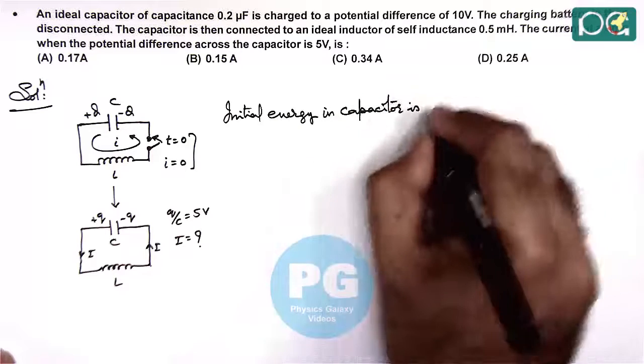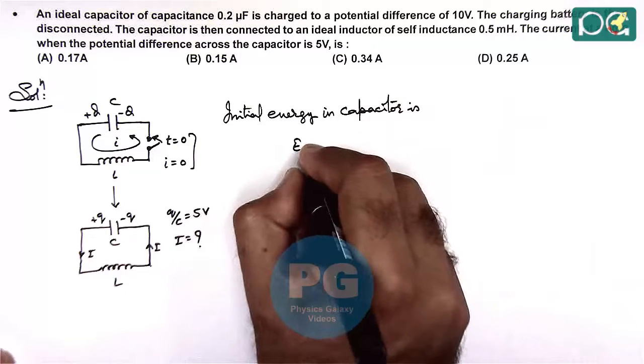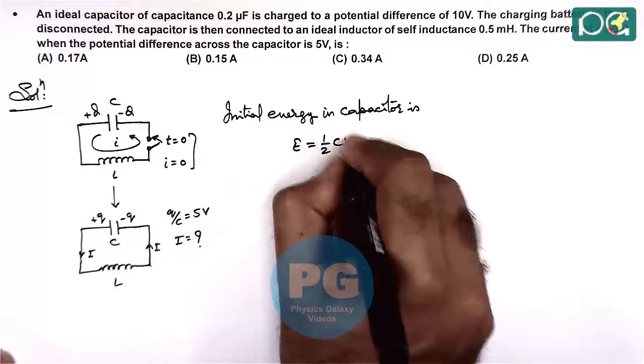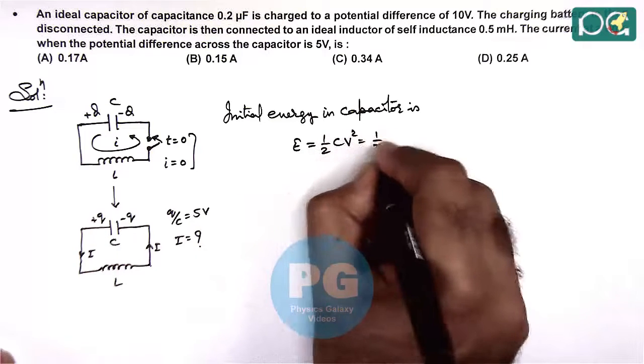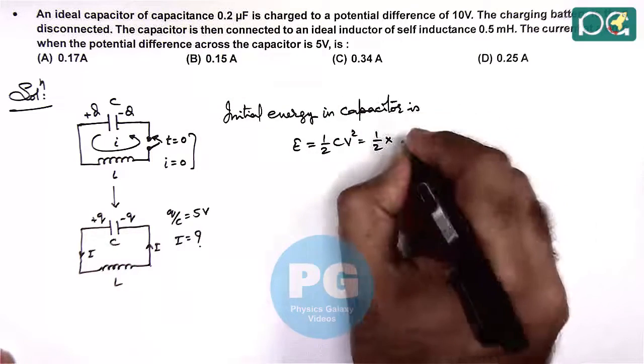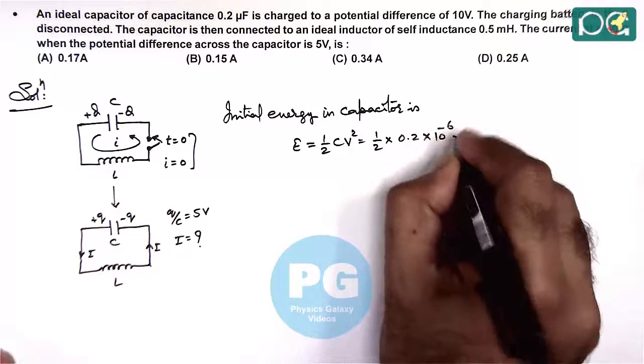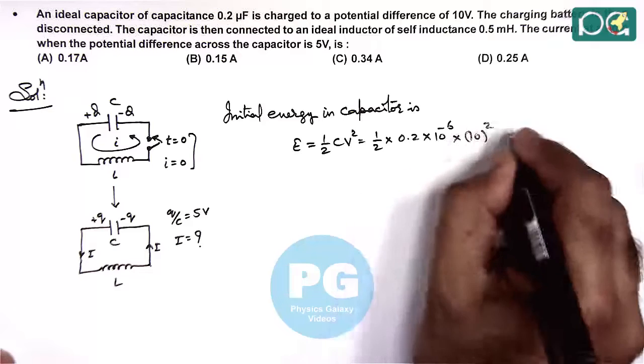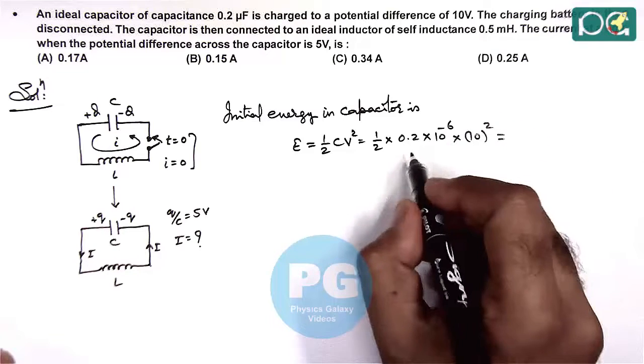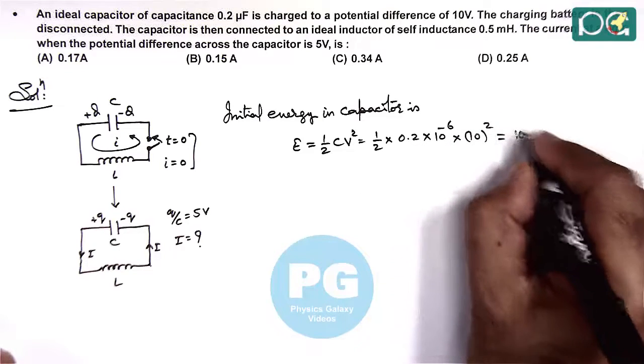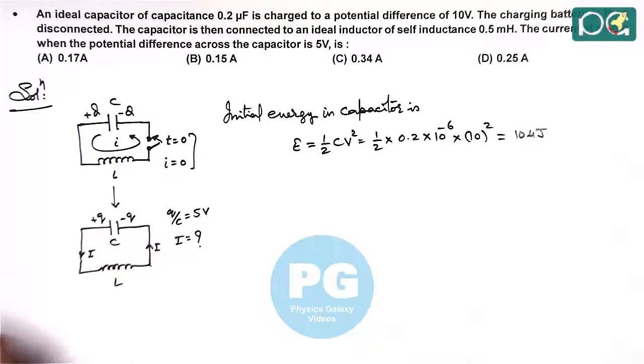This initial energy is E equals half CV squared, which is half multiplied by capacitance 0.2 times 10 to the power minus 6, and voltage is 10. This gives us 10 microjoules as the initial energy in the capacitor.